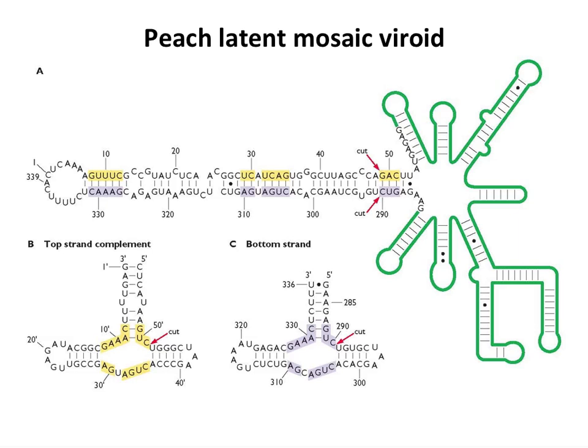Here's another viroid, peach latent mosaic — these are larger viroids with different kinds of structures from potato spindle tuber viroid. You can see they're extensively base-paired and have a lot of RNA secondary structure.